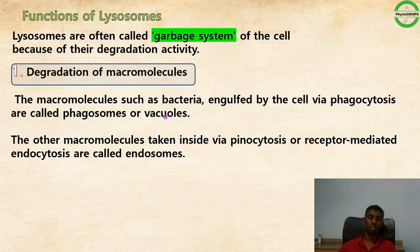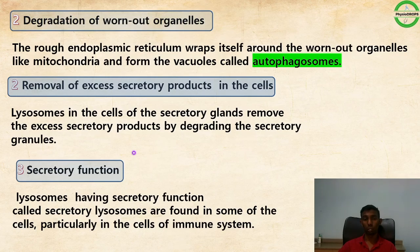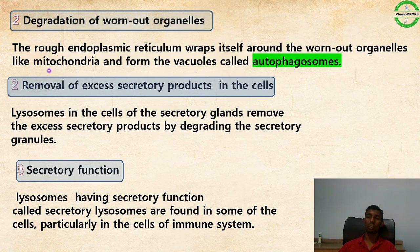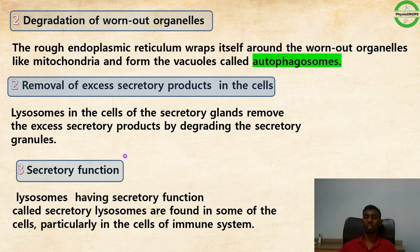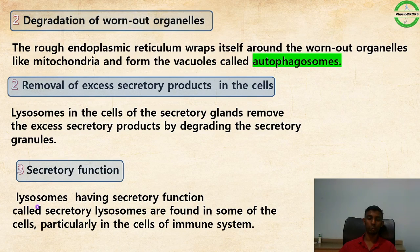Lysosomes degrade macromolecules such as bacteria via phagocytosis, amino acids, and other macromolecules taken inside via pinocytosis or receptor-mediated endocytosis. They also degrade worn-out organelles like mitochondria (forming autophagosomes), remove excess secretory products by degrading secretory granules, and have a secretory function — secretory lysosomes are found particularly in immune system cells.